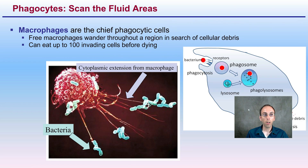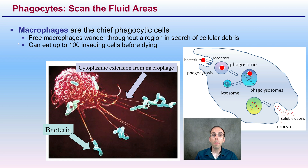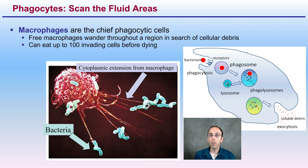Getting into phagocytes, they basically scan the fluid areas of the body. Macrophages are one example, and they are the chief phagocytic cells in the body. They are free macrophages that wander through regions in search of cellular debris, and they can kill up to 100 invading cells before dying.